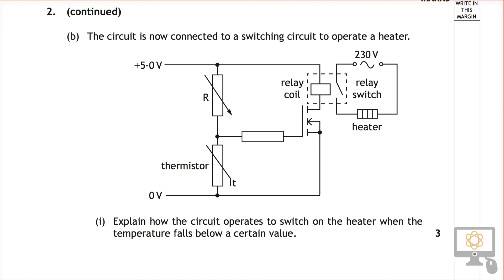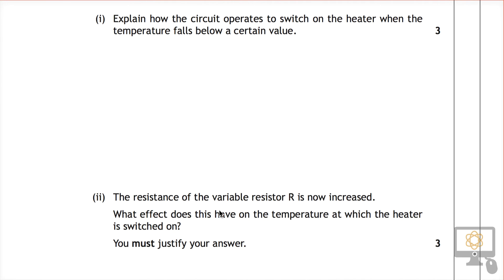So we're now going to look at question 2b part 2 from the 2014 National 5 physics paper. It says that the resistance of the variable resistor is now increased. What effect does this have on the temperature at which the heater is switched on and you must justify your answer? This is one of these questions where unless you actually give a justification you won't get any marks even if you give the right answer to the actual question.